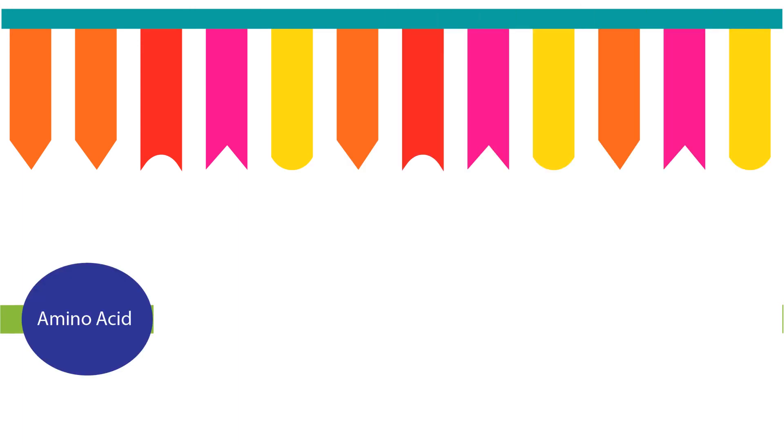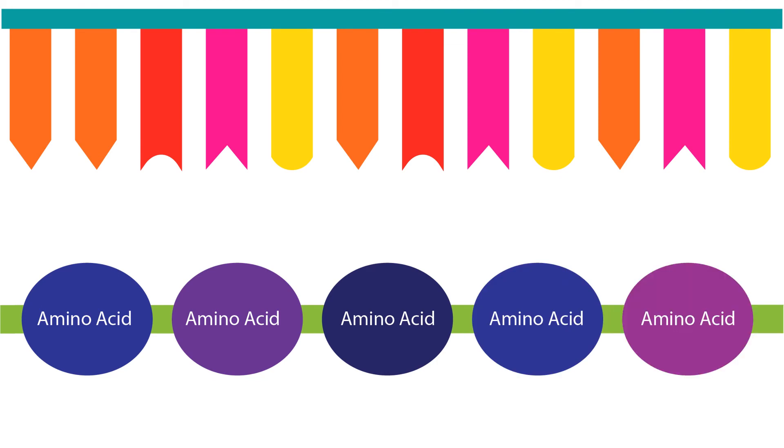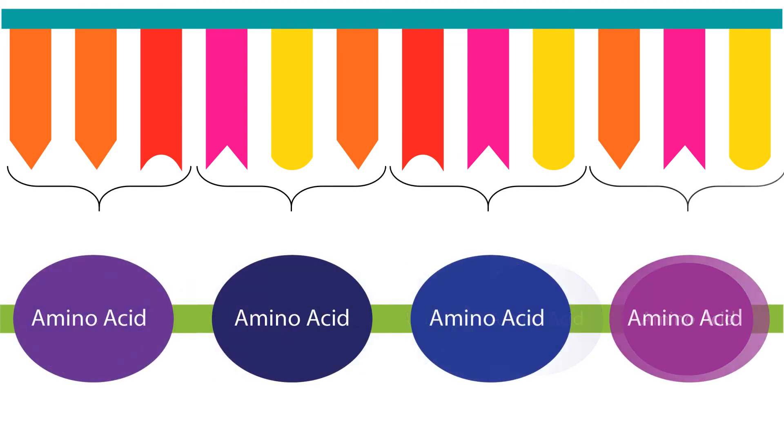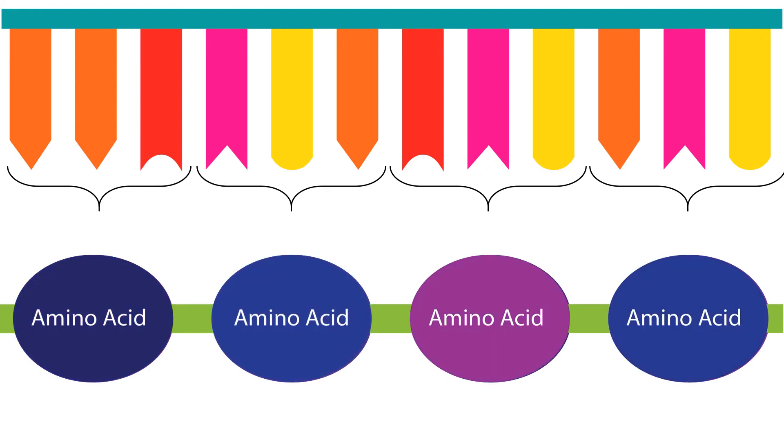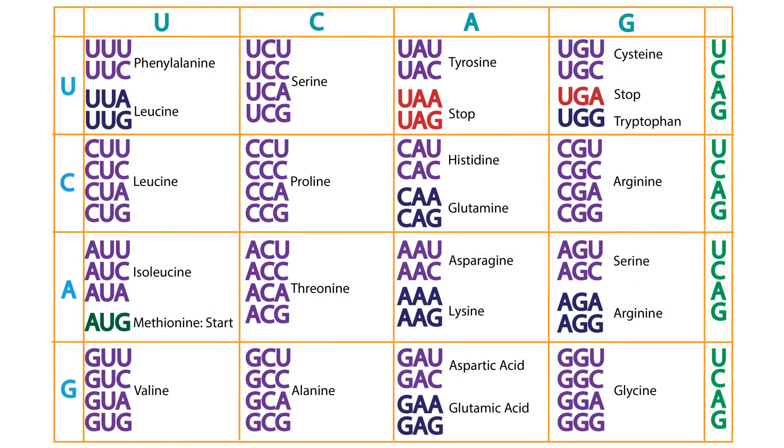They were able to adjust their experimental design to find evidence that the genetic code was read in triplets, like Crick had previously proposed, and determined the RNA codon for a total of 15 amino acids that led to the completion of the codon table by other scientists.